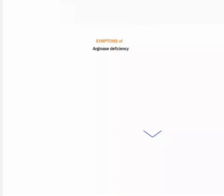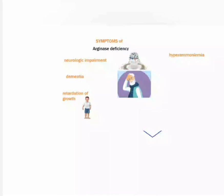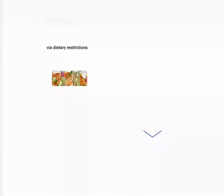Symptoms of the disorder include neurological impairment, dementia, retardation of growth, and hyperammonemia. While some symptoms of the disease can be controlled via dietary restrictions and pharmaceutical developments, no cure or completely effective therapy currently exists.